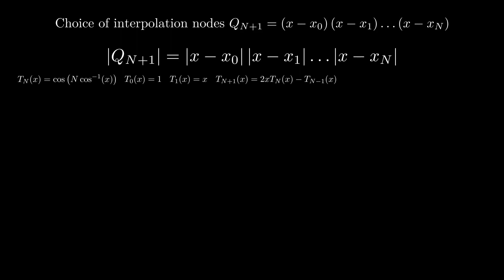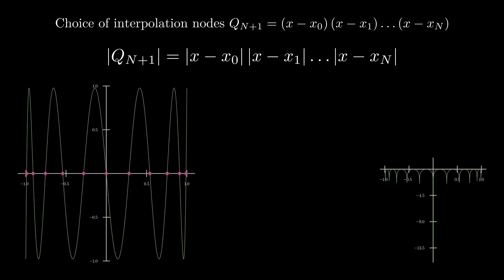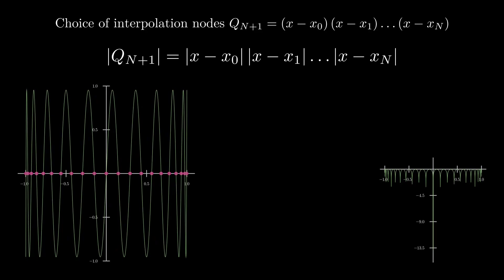We can see one immediate benefit to the Chebyshev polynomials. The cosine restricts the output to the range negative 1 to 1. Watching the progression, we see that as the order increases, the variation of the extrema remains constant.